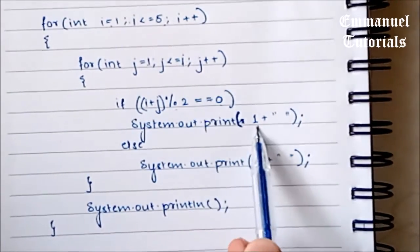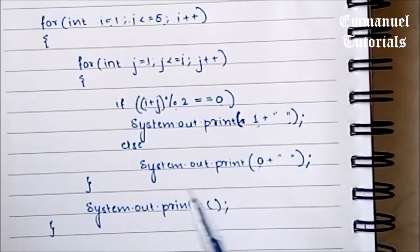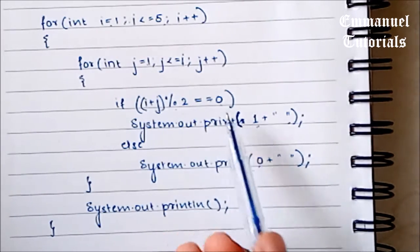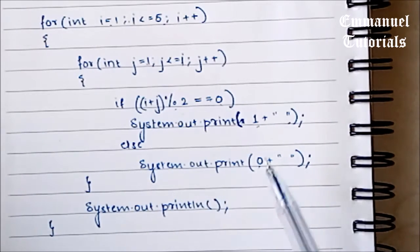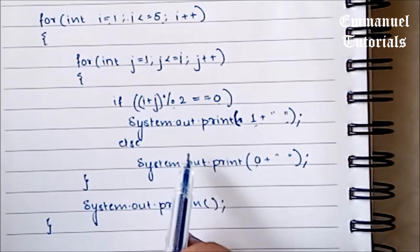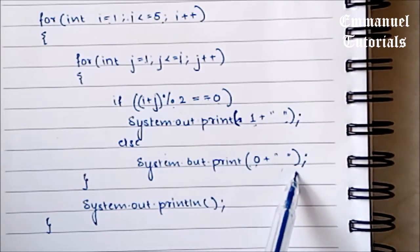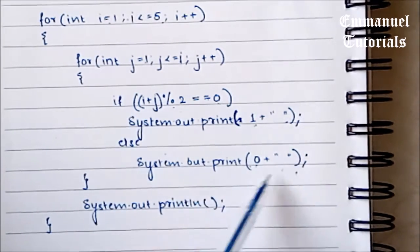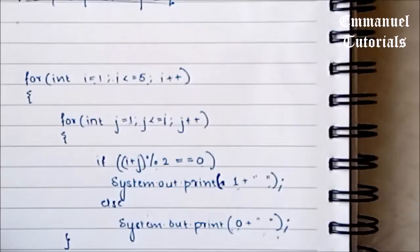So if the remainder is 0, we print 1 and we print a space along with it because they are space separated. You could also print tabs. And if at all the remainder is not 0, it is obviously 1 because we are finding the modulus by 2. If the remainder is 1, we are printing 0 and then printing a space. Once one row is completed, we print a new line and move on to the next row. So we will see how this is working.